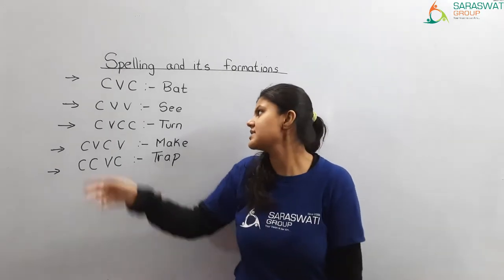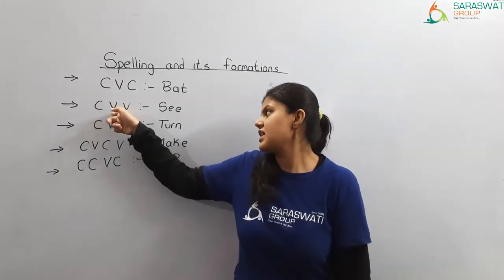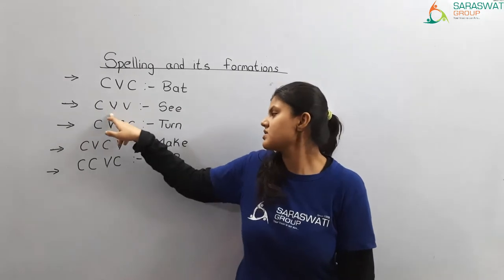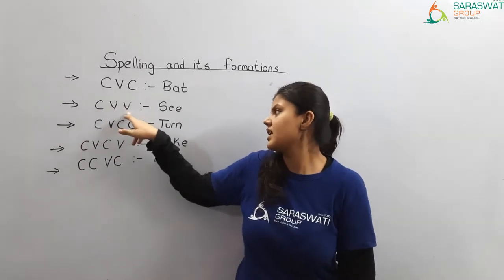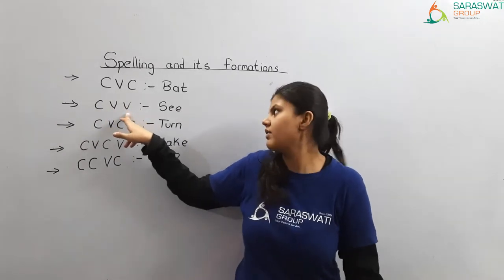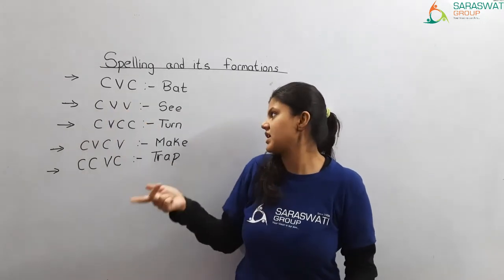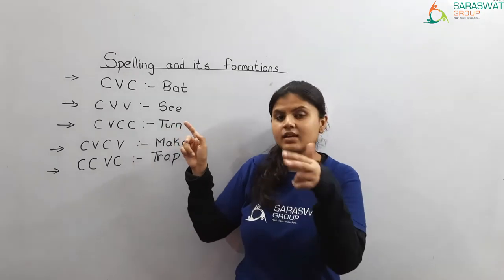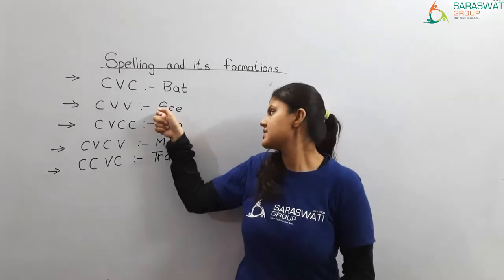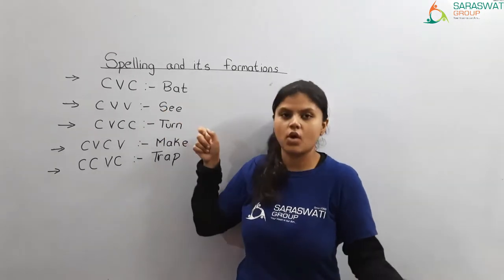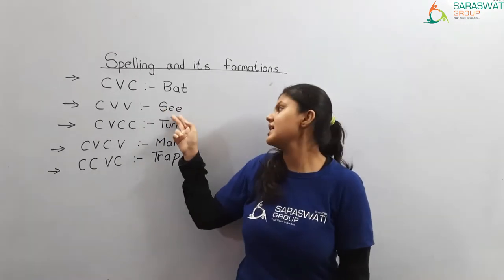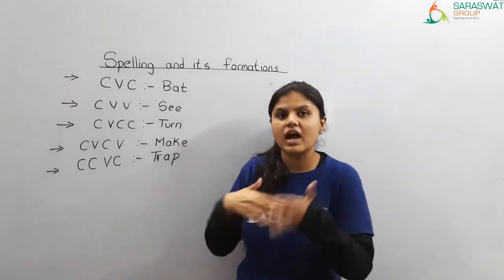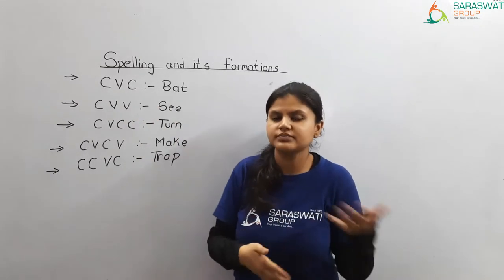Another formation is C-V-V: C is consonant, V is vowel, V again is vowel. I have taken the example of the word SEE: S is a consonant, E is a vowel. So you can see how it is formed.